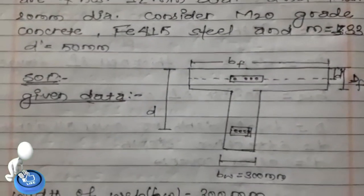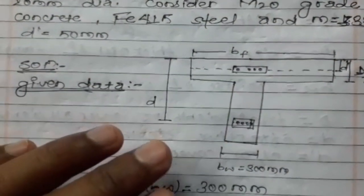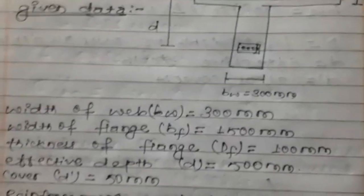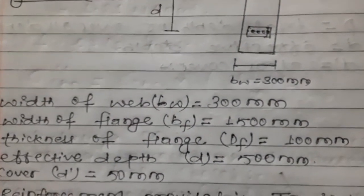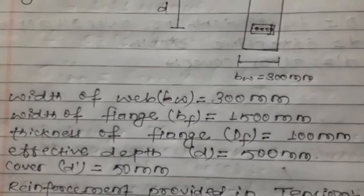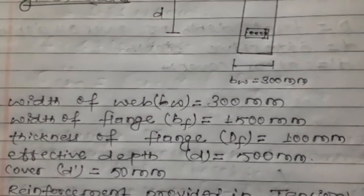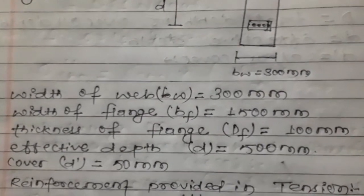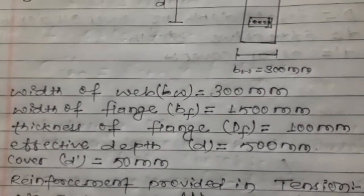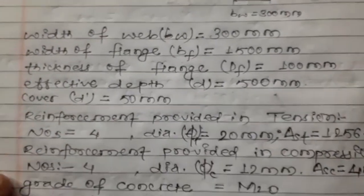Now we begin the solution. The doubly reinforced flanged beam (T beam) has: width of web = 300 mm, width of flange = 1500 mm, thickness of flange = 100 mm, effective depth D = 500 mm, cover = 50 mm.